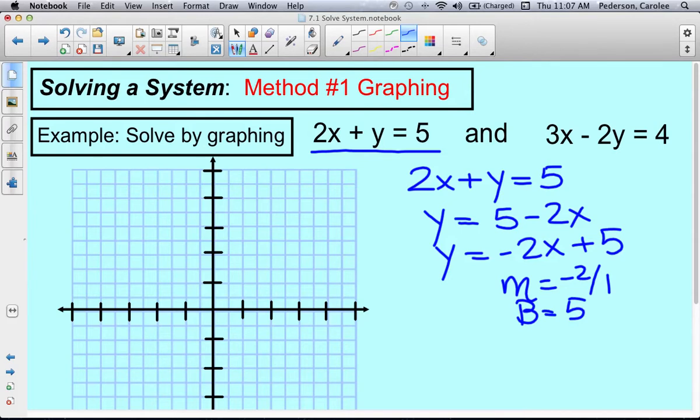So let's come over and graph it. Y-intercept of 5, and a slope of negative 2. So we're going to go down 2, right 1, down 2, right 1, down 2, right 1, and create this line.